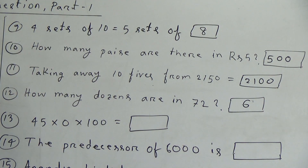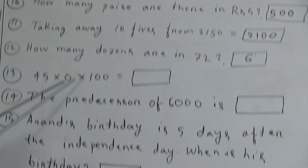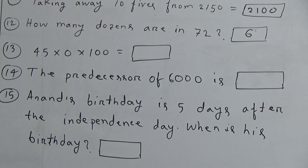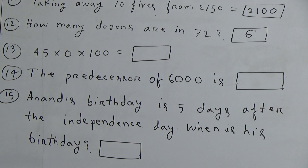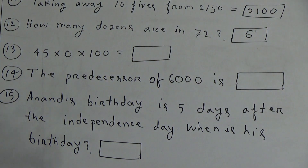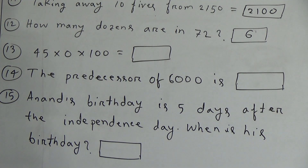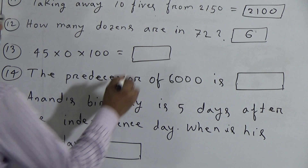Thirteenth question: 45 multiplication 0 multiplication 100 is equal to what? Here 0 exists. We know that if we multiply 0 by any number, the answer will be 0. So here the answer is 0.